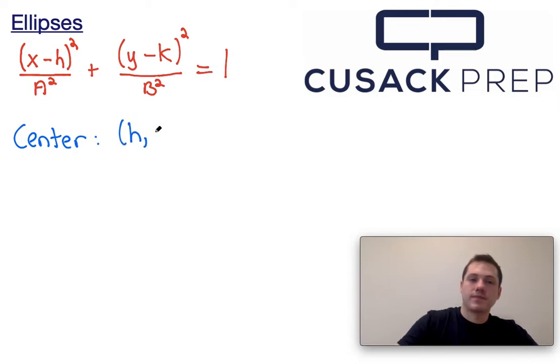and a and b are used to help you figure out what your major axis is, what your minor axis is, and how you can graph an ellipse. So probably easiest just to go through an example.